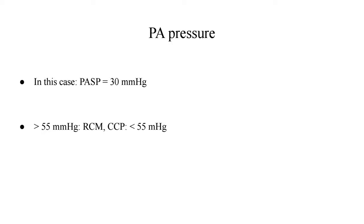The pulmonary arterial pressure was estimated using the tricuspid regurgitation jet. In our case, the pulmonary artery systolic pressure was 30 mmHg. To differentiate chronic constrictive pericarditis from restrictive cardiomyopathy: if PASP is more than 55 mmHg, it points more towards restrictive cardiomyopathy, whereas a PASP less than 55 mmHg, together with other hemodynamic findings, is consistent with chronic constrictive pericarditis.